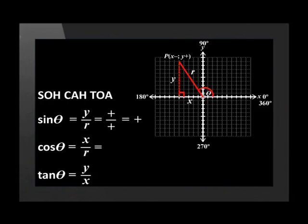For cos, the adjacent side X is negative and the hypotenuse R is positive. A negative value divided by a positive value equals a negative value. Therefore, the cos of any angle in quadrant 2 will be negative. And for tan, the opposite side Y is positive and the adjacent side X is negative. A positive value divided by a negative value equals a negative. Therefore, the tan of any angle in quadrant 2 is negative. We can see that the only ratio that is positive in quadrant 2 is sine.